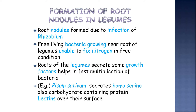The formation of root nodules in legumes: first, root nodules are formed due to infection by Rhizobium. Second, free-living bacteria growing near the root of legumes are unable to fix nitrogen in free condition. Roots of the legumes secrete some growth factors which help in fast multiplication of bacteria. For example, Pisum sativum secretes homoserine, also carbohydrate-containing proteins called lectins, over their surface.